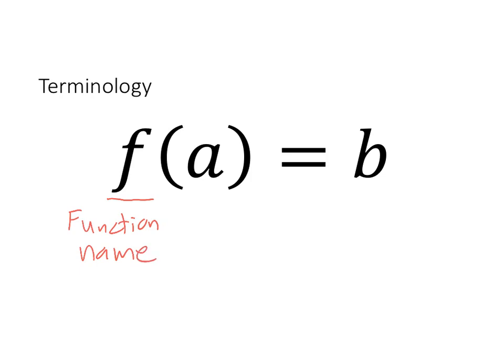The second component to the notation is the statement inside the parentheses here, in this case, a. This represents the input of the function, function input.